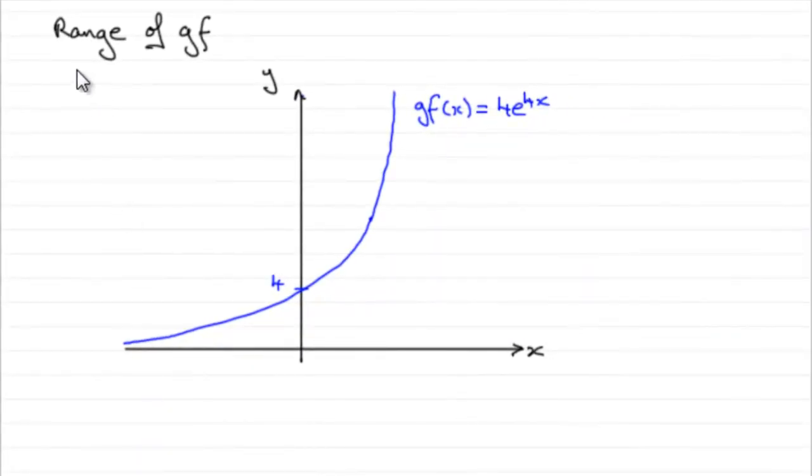Okay, so in this part of the question then we've got to find the range of GF. GF of x, the graph is equal to 4e to the 4x.